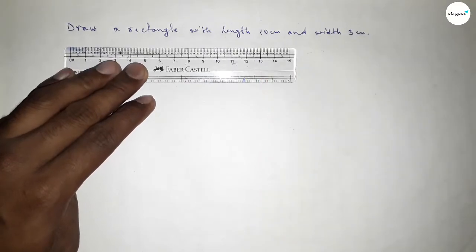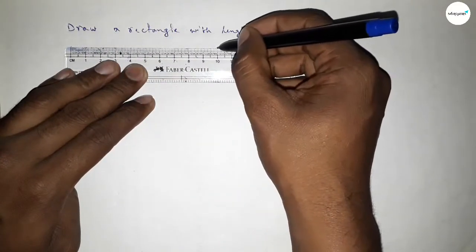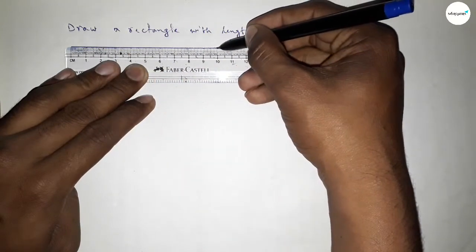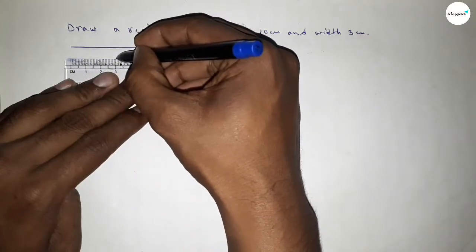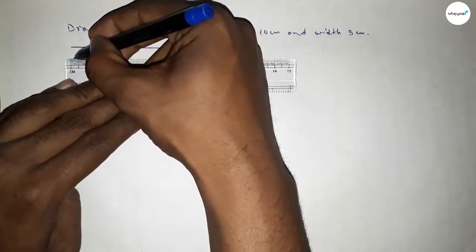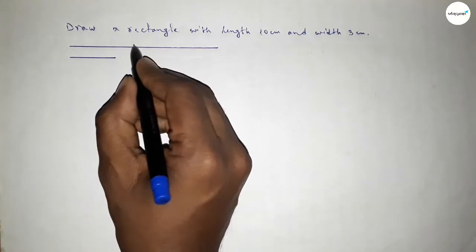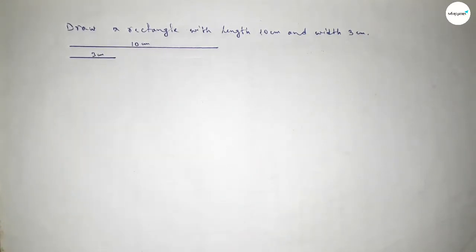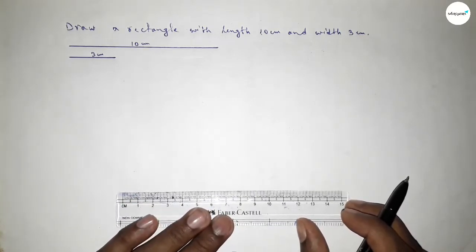First of all we have to draw a line of length 10 centimeter, so this is 10. Next we have to draw a line of length 3 centimeter, so this is 3. So this one is 10 centimeter and this one is 3 centimeter.